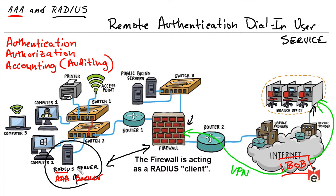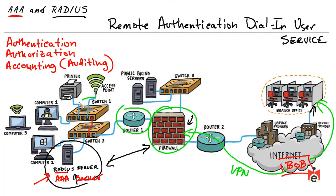It makes much more sense to have a centralized AAA server rather than configuring user accounts and permissions locally on every individual device. We set up the AAA server, then train our firewalls, routers, switches, and other network devices to act as AAA clients — calling on the AAA server to provide authentication, authorization, and accounting services when users like Bob try to access those devices.